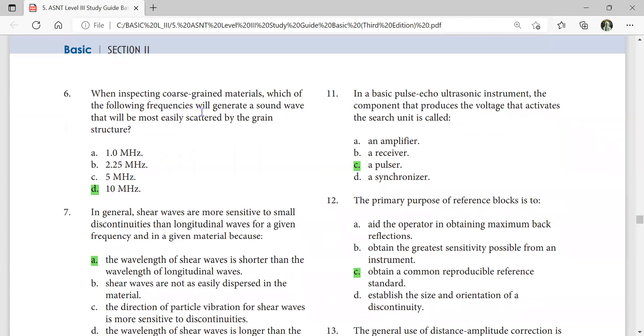When inspecting coarse grained material, which frequency will generate a sound wave that will most easily be scattered by the grain structure? The most easily scattered means high frequency. So for coarse grained material, you have to use 1 MHz probes or less depending on what you are getting.